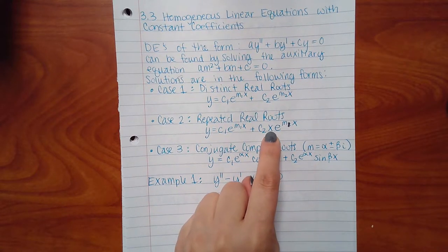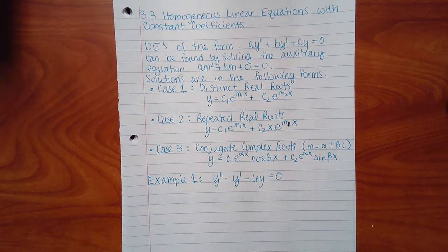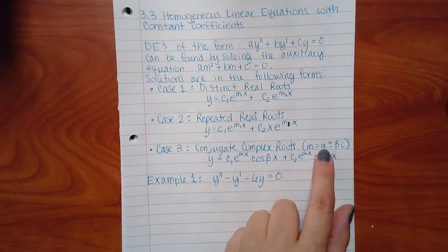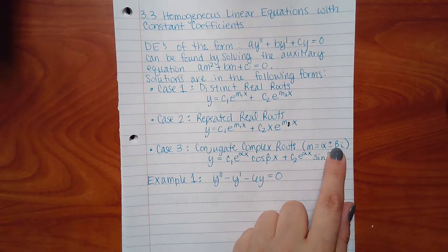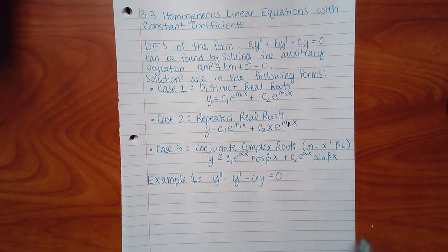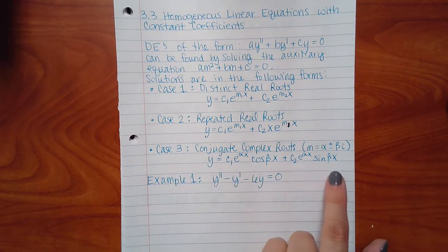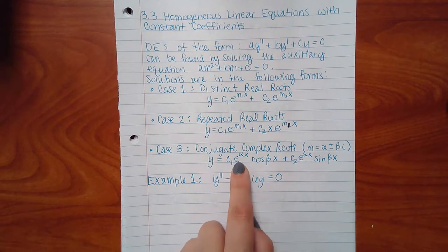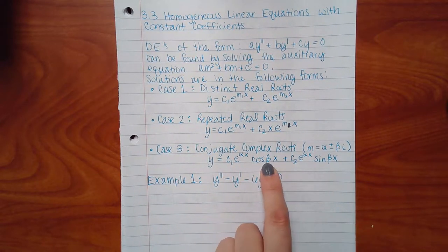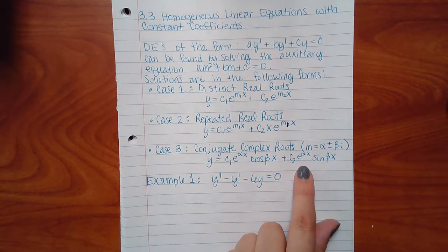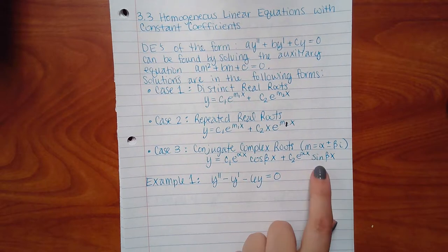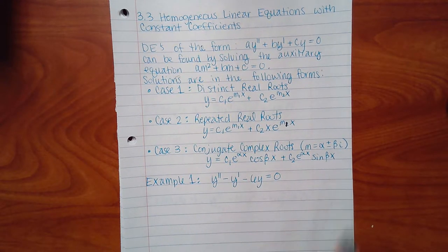For Case 3 — complex roots — you separate the complex root into its real part alpha and its imaginary coefficient beta. The general solution is then: c₁ e to the alpha times x, times cosine of beta times x, plus c₂ e to alpha times x, times sine of beta times x. You'll have those formulas on the test, but you need to know when and how to use them.